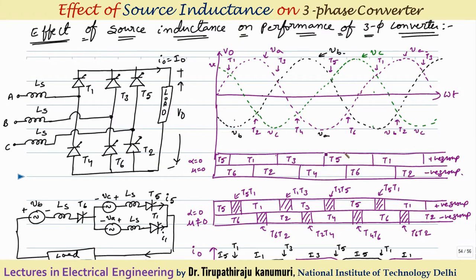In practice, the source has inductance. When triggering occurs — that is, when current exchanges from T5 to T1 — the current carried by T5 should become zero instantaneously and the entire current should transfer to T1. But the source inductance will not allow a sudden change in current. It will not allow the current to shift from T5 to T1, because T5 is connected to phase C changing to phase A. Phase C will not allow the current to decrease suddenly, and phase A will not allow the current to rise suddenly to I₀.